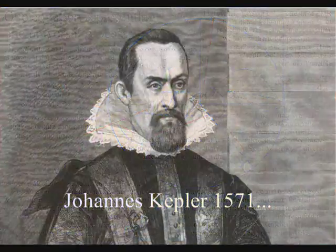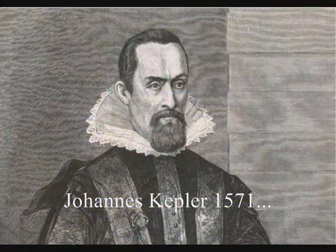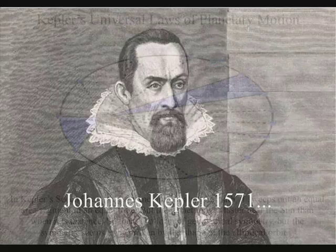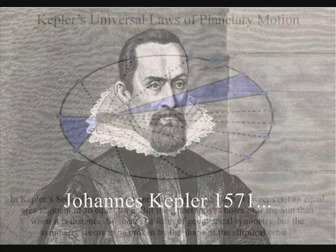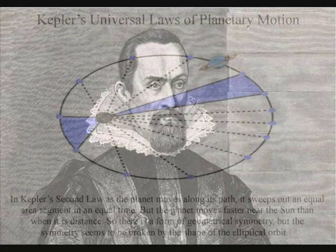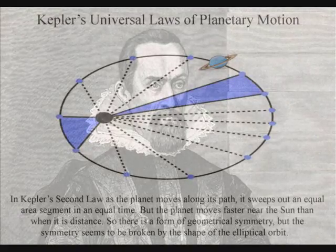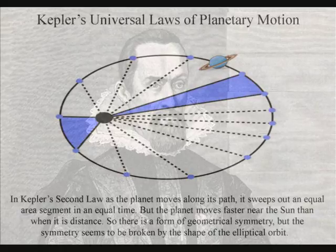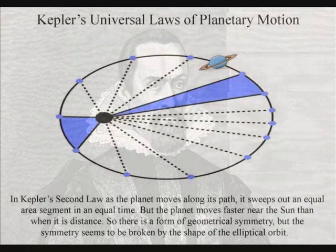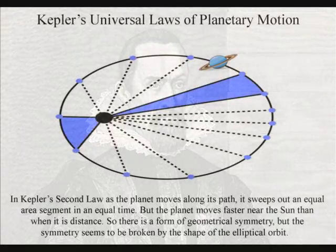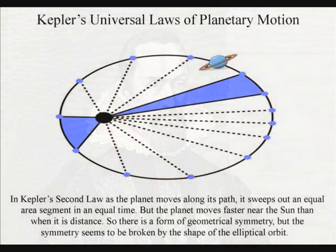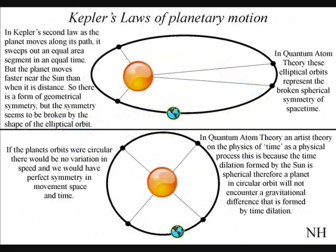Kepler believed that the underlying structure of the universe was built from perfect geometrical forms. But when he observed the motion of the planets, he found that they moved in elliptical orbits with speeds that vary relative to the distance from the sun. The closer the planet is to the sun, the faster it moves, as we can see in the top part of this diagram.